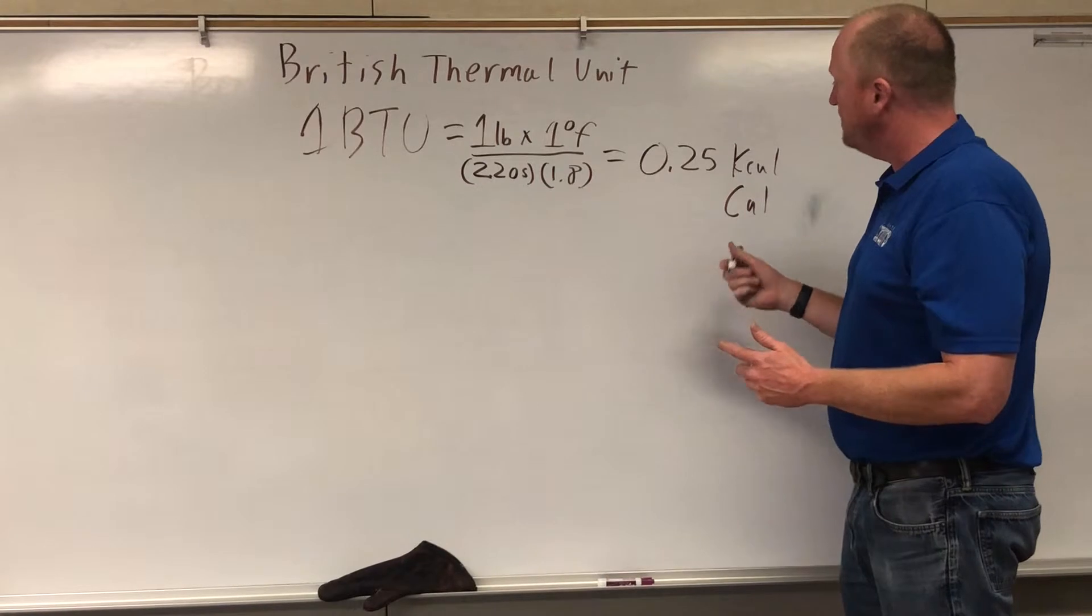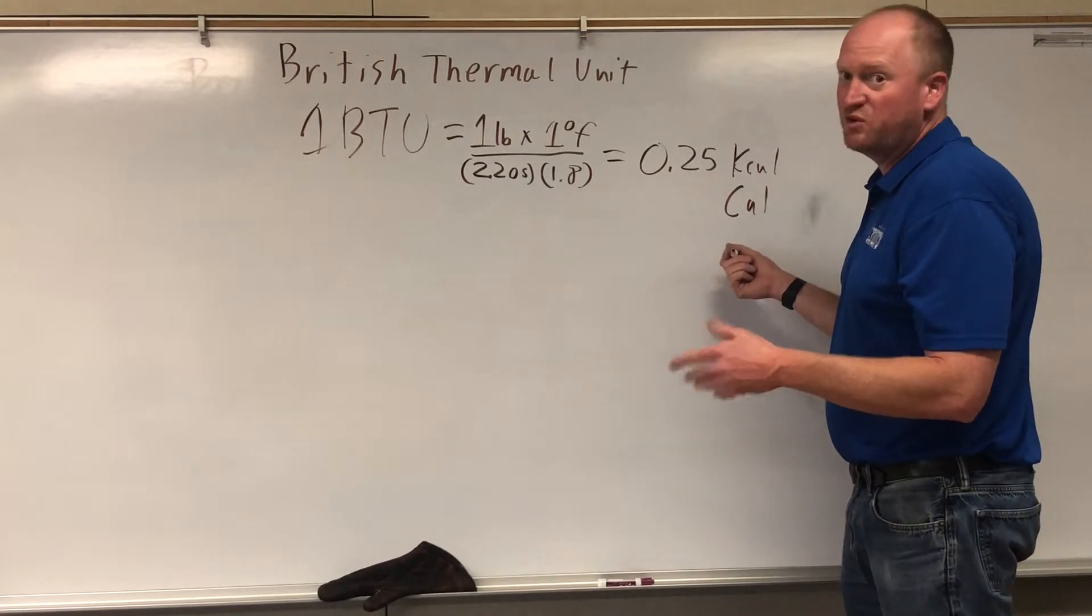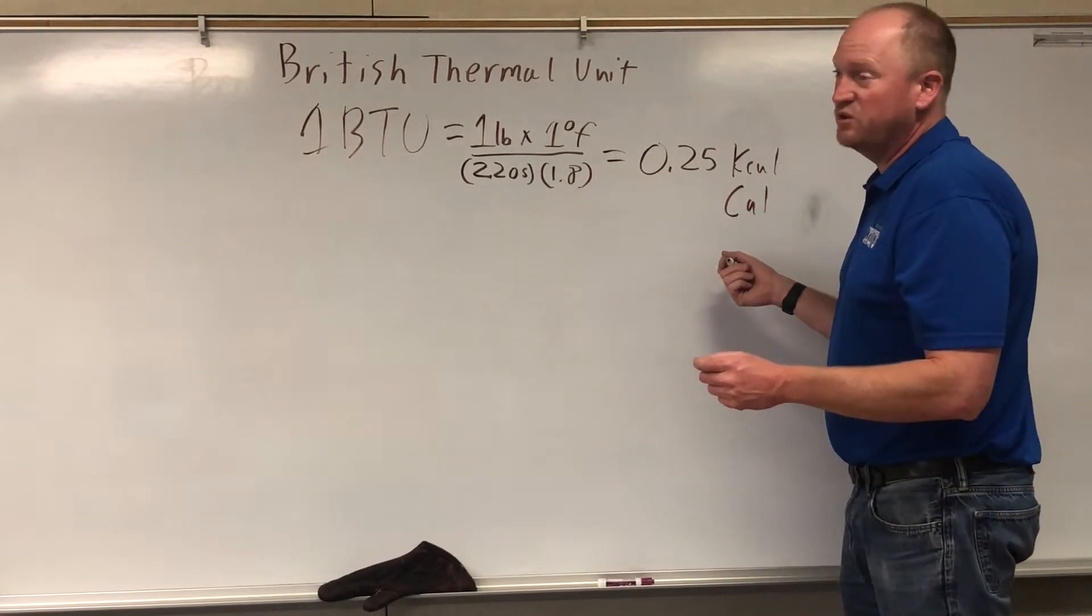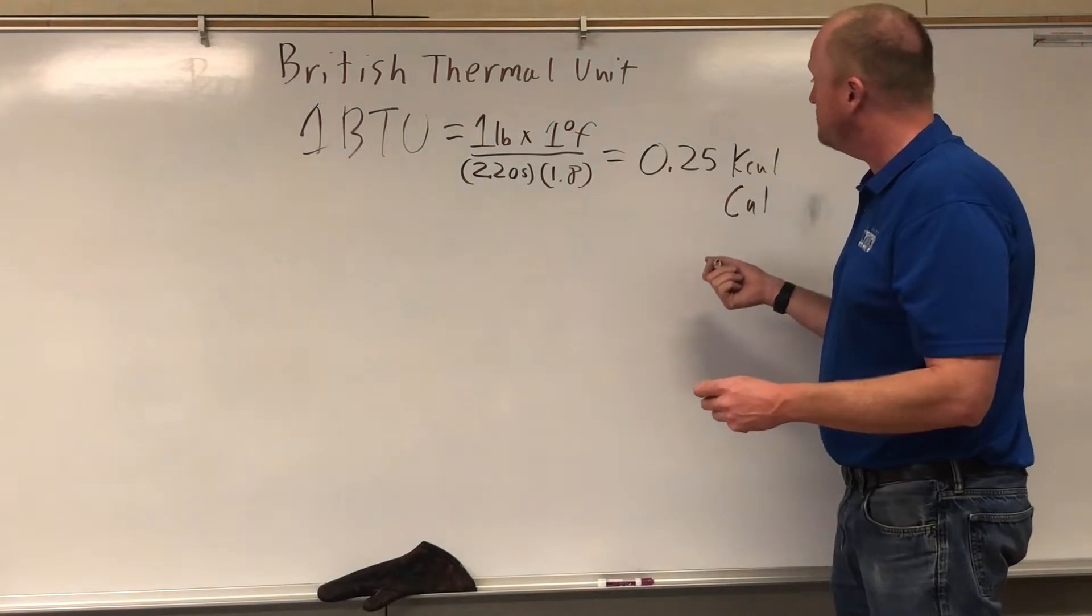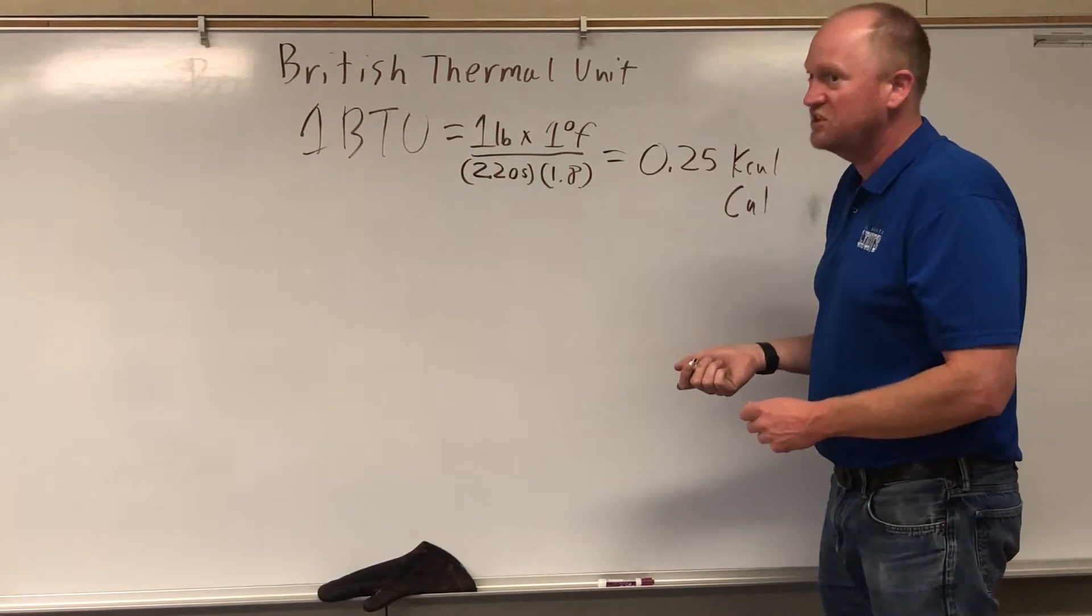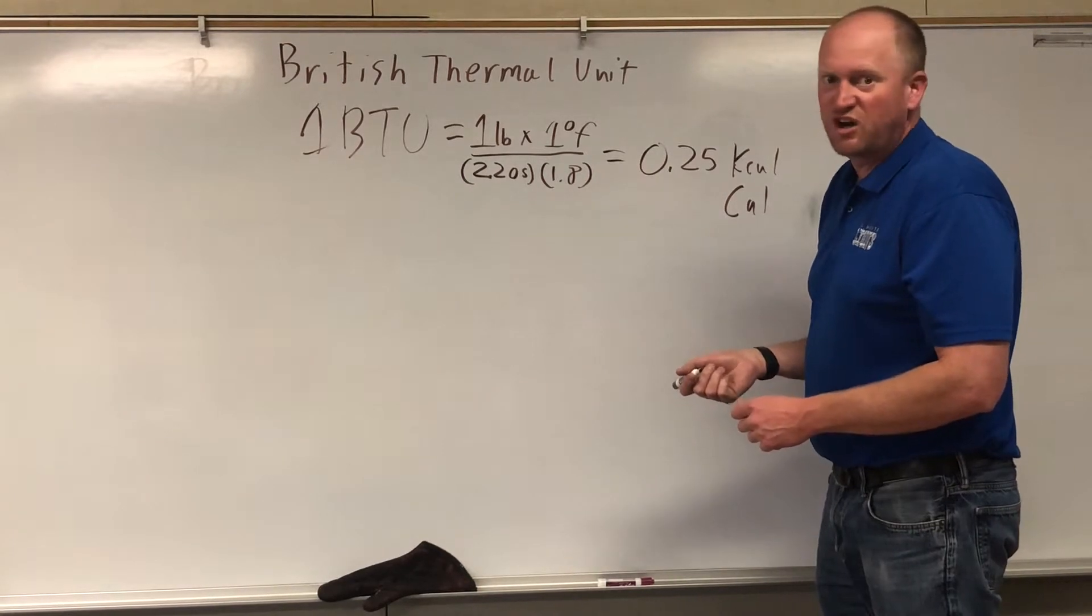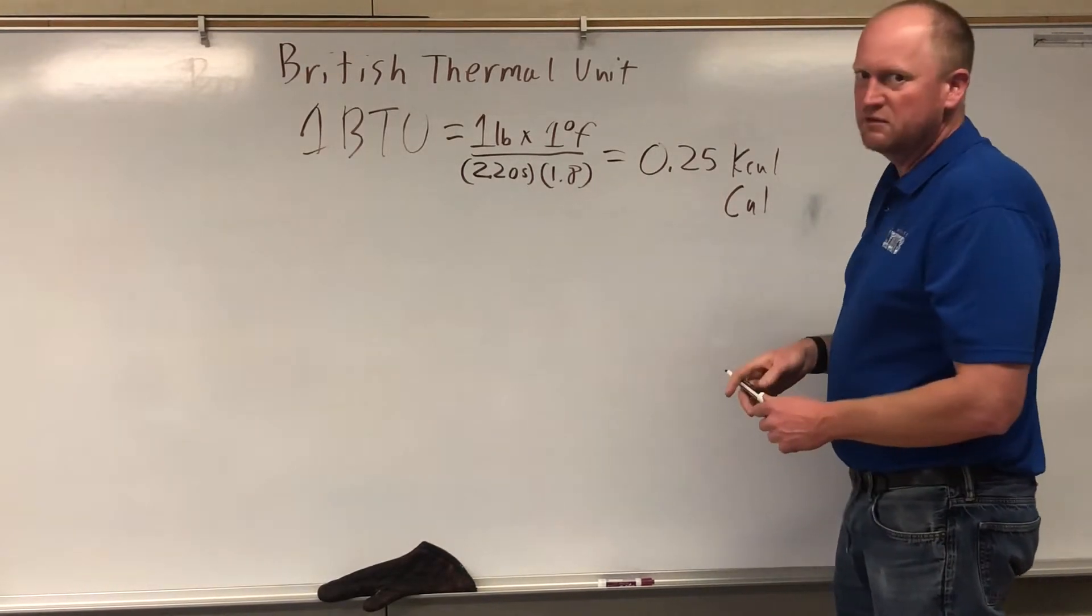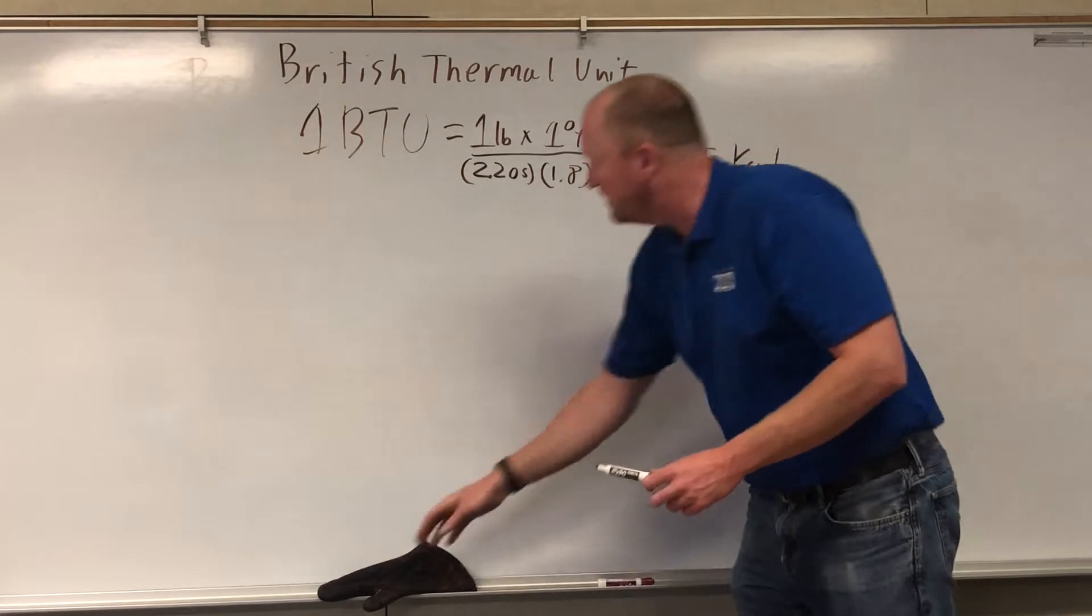So basically the dietary calories - if you look at a chocolate bar, it's got 200 dietary calories, or 200 kilocalories - that's approximately 800 BTUs if they sold chocolate in BTUs, which I don't understand why they wouldn't. But so now you know.